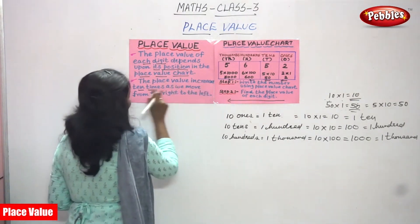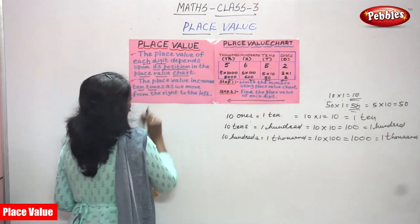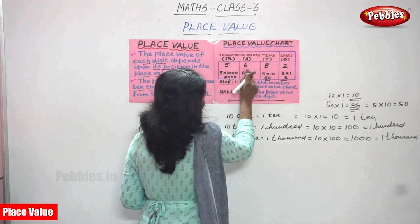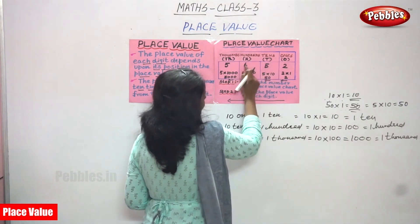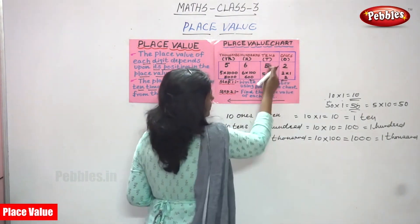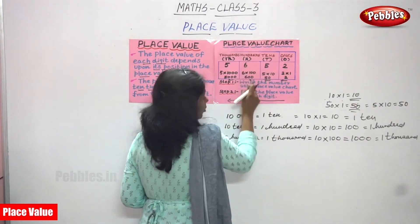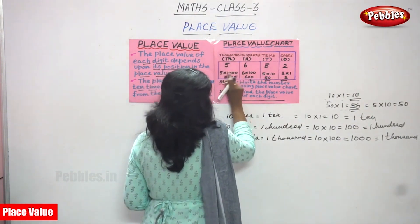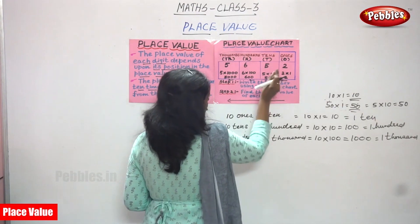The place value increases ten times as we move from right to left. For 5652: 2 is in the ones place, 5 in the tens place, 6 in the hundreds place, and 5 in the thousands place. So 2 into 1 gives 2, 5 into 10 gives 50, 6 into 100 gives 600, and 5 into 1000 gives 5000.